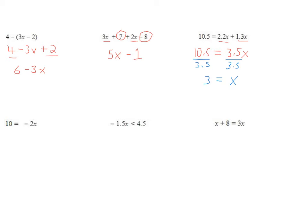Here's a simple one — again a one-step equation. We have to get x by itself. We have a minus 2 times x, so we need to divide by negative 2 to undo it. Divide this side by negative 2. We get x equal to positive 10 divided by negative 2, which is negative 5. Be careful with your signs here.